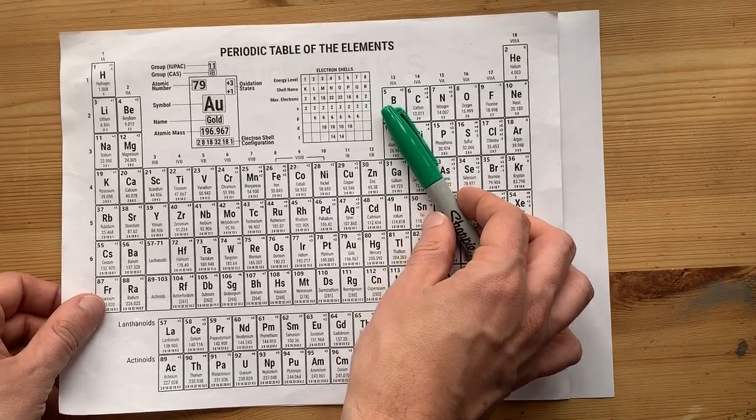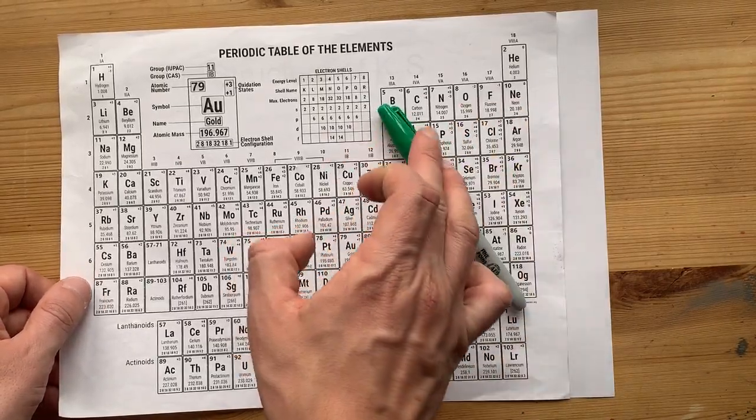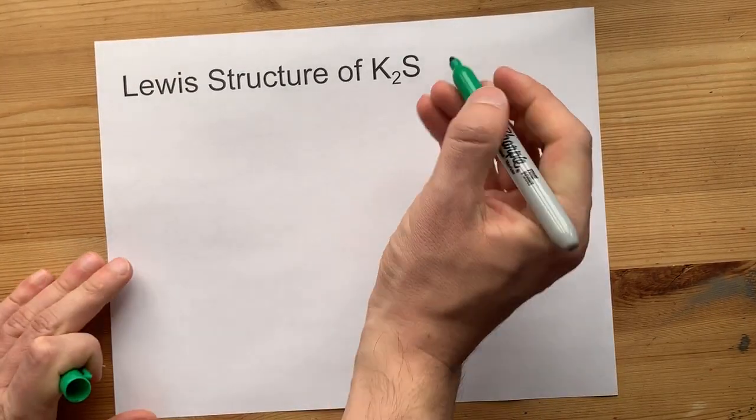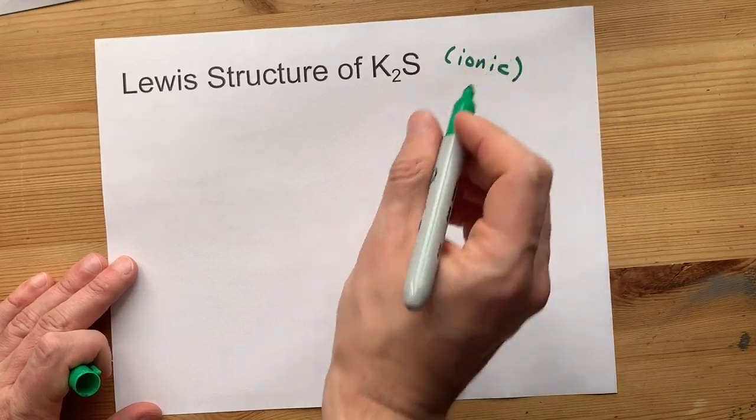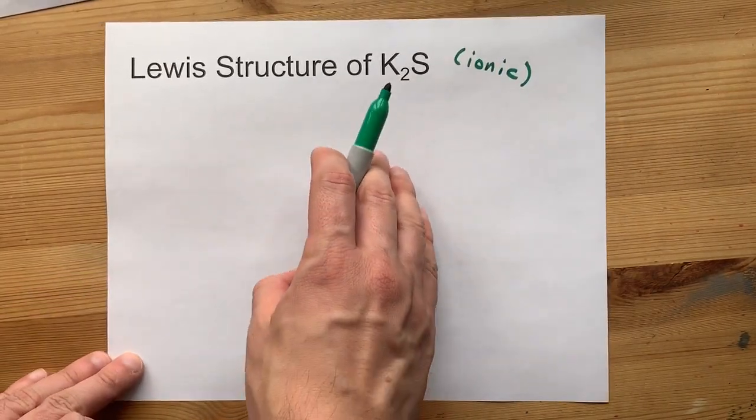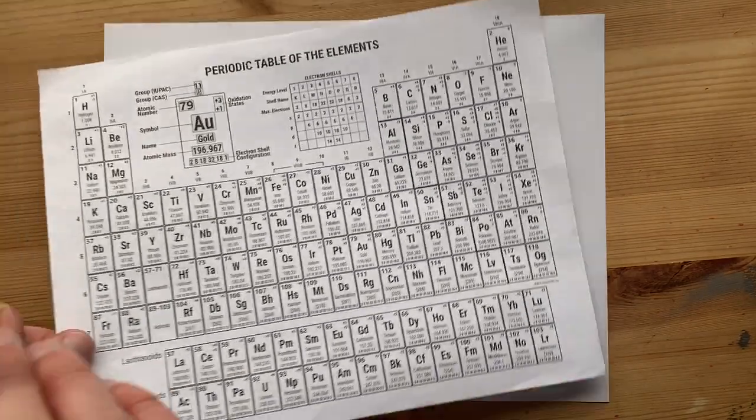Sulfur, on the other hand, is from the right-hand side of this staircase. It's a non-metal. When metals and non-metals combine together, they end up forming ionic compounds, which indicate that the metals are giving their electrons away to the non-metals.